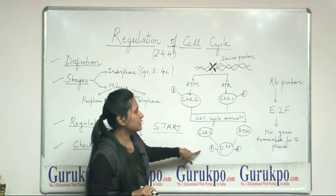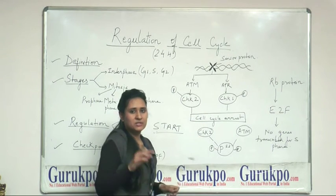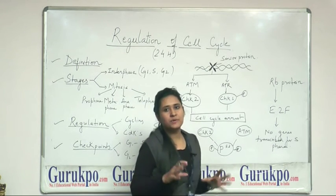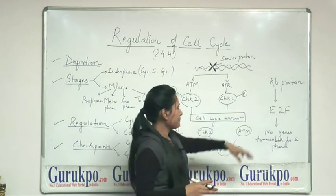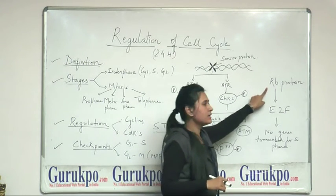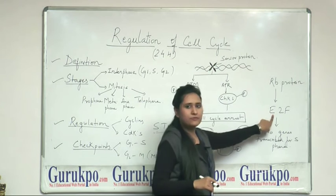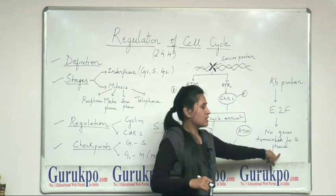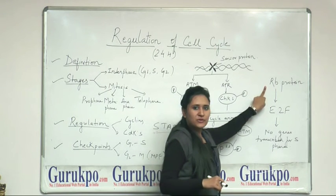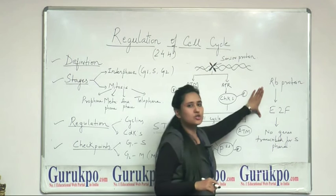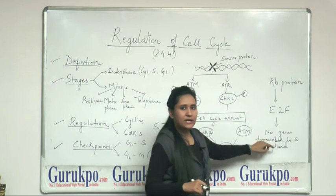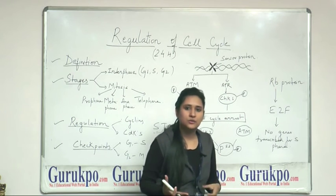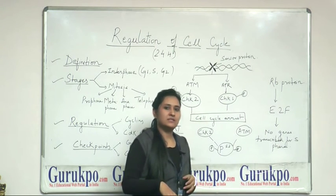The third is RB protein, which is found in the retina. RB protein is activated only when it is dephosphorylated. When it is dephosphorylated, it will bind with E2F. E2F is a factor which is responsible for the genes of S phase. So, when it is dephosphorylated, it will bind with E2F and this combination will prevent the formation of these genes. So, cell will not enter into the S phase. It will get arrested into the G1 phase itself.